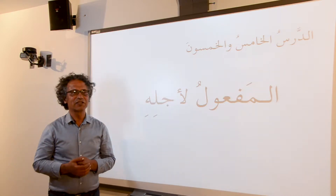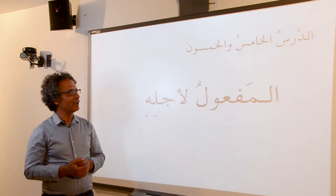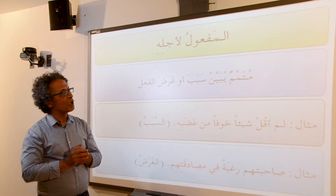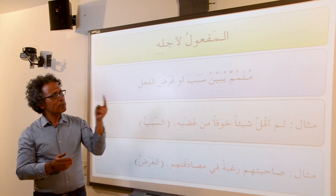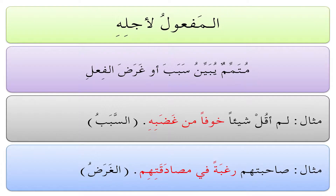Hello and welcome to a new class from the study of the menhah, which is about المفعول لأجله. It's called in English the adverb of purpose. It truly expresses not only purpose, but sometimes also cause for a certain action. You will see through the examples. It is a complementary part — not essential to the grammar of the sentence — but it explains the reason or the purpose of the verb or the act.